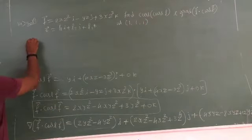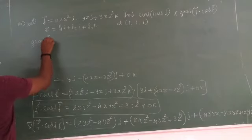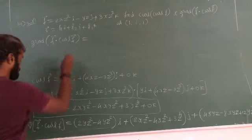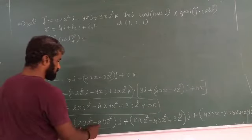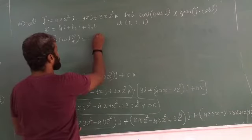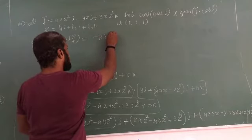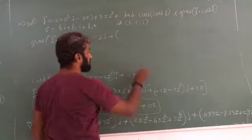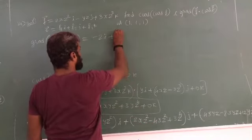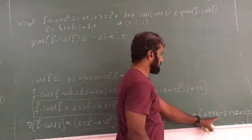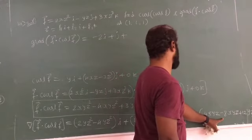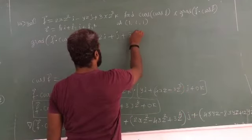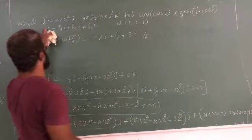Gradient of F dot curl F equals (2 minus 4) i which is minus 2i, plus (2 minus 4 plus 3) j which is plus 1j, plus k times (minus 4 plus 8 plus 12) which is plus 16k. This is the answer.